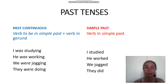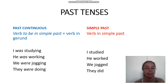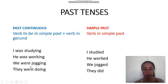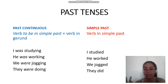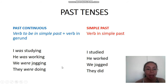The past continuous is formed with the verb 'to be' in simple past. Remember that 'to be' has two different forms for simple past: 'was' or 'were.' We use each conjugation depending on the subject. If the subject is singular — I, he, she, or it — the verb is 'was.' If the subject is plural — we, you, they — the verb is 'were.'